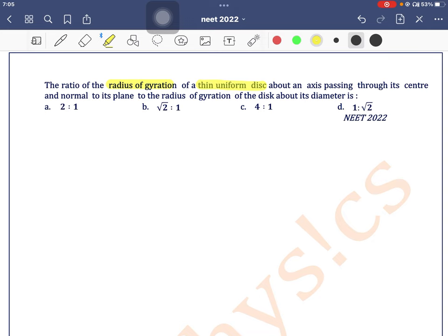The ratio of the radius of gyration of a thin uniform disc about an axis passing through its center and normal to its plane to the radius of gyration of the disc about its diameter is. So here are two scenarios.